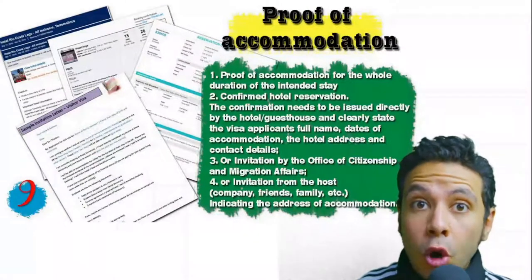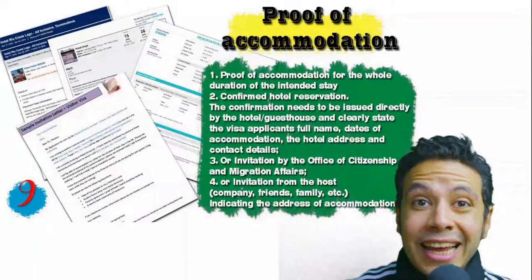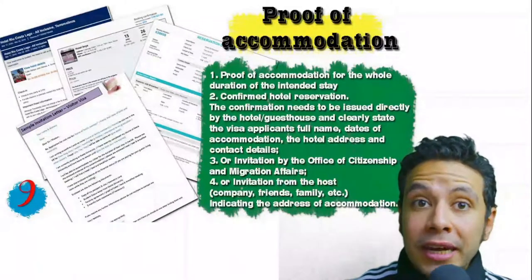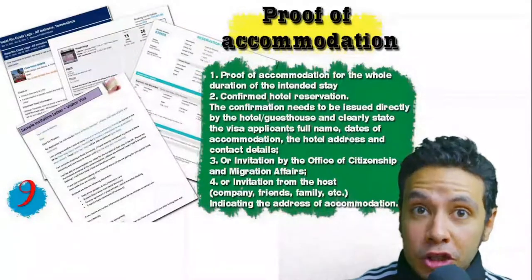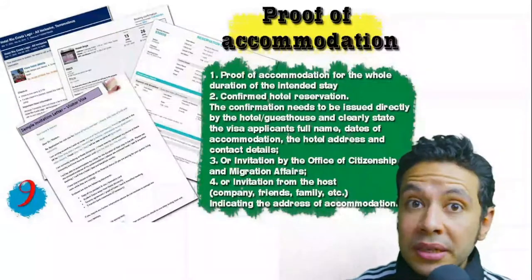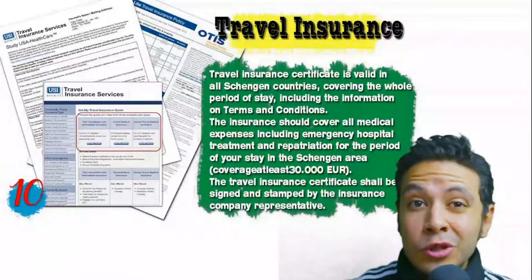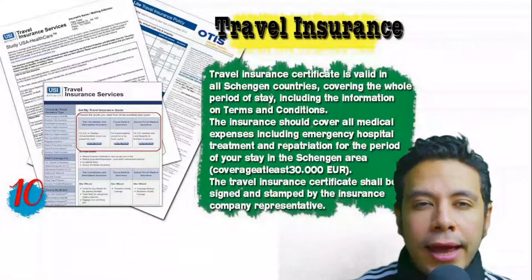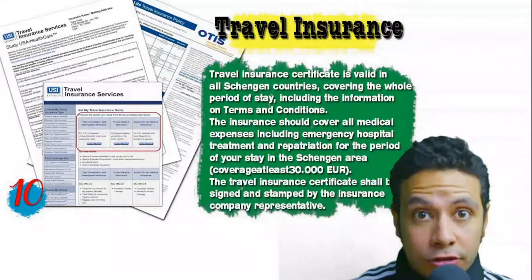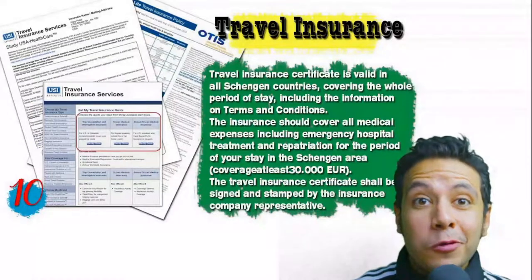You will also need to provide proof of accommodation: a confirmed hotel reservation, an invitation from a host, or an invitation from an organization. An initial booking is generally acceptable, but in some cases a confirmed booking may be needed. The hotel name, address, and contact number must be mentioned. If invited by a person, the invitation letter should be mailed directly to the embassy or submitted by you with a copy of the inviting person's passport. Many countries, especially Schengen area countries, also require travel insurance with coverage of at least 30,000 euros, from officially accepted companies.